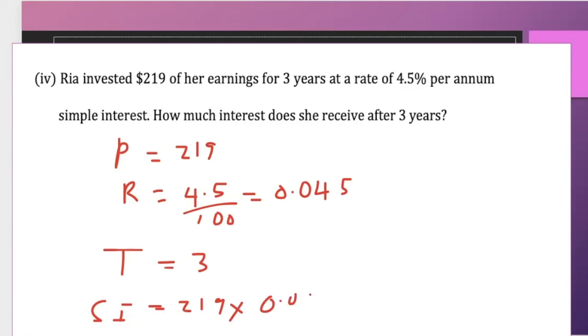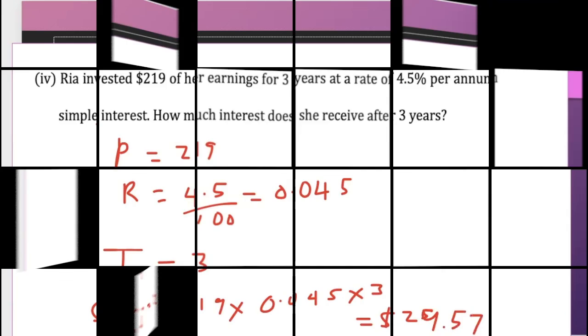We multiply 219 times 0.045 times three years to give us $29.57. And that's it.